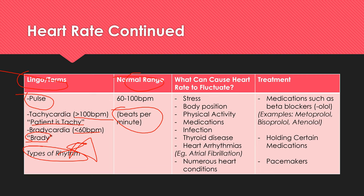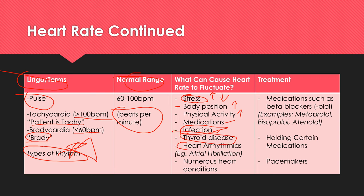What can cause heart rate to fluctuate? Stress will raise it; deep sleep will lower it. Body position — standing up from lying down puts load on the heart, especially as you age. Physical activity raises it significantly. Medications can raise or lower heart rate. Infection is a big one — if someone has an infection you'll see both a higher temperature and a higher heart rate. Thyroid disease and arrhythmias like atrial fibrillation can also affect heart rate.